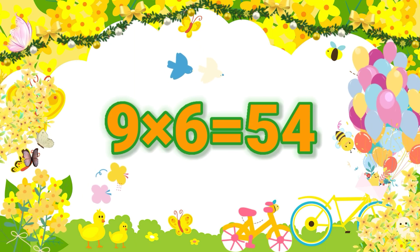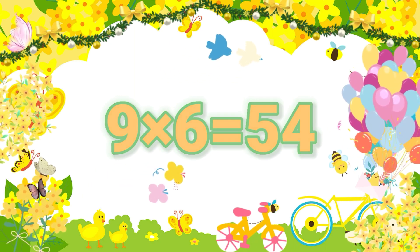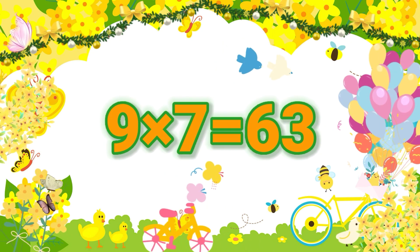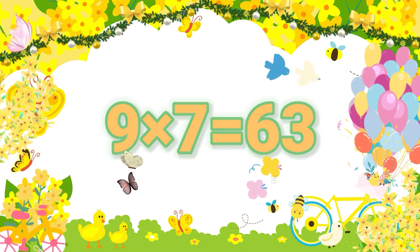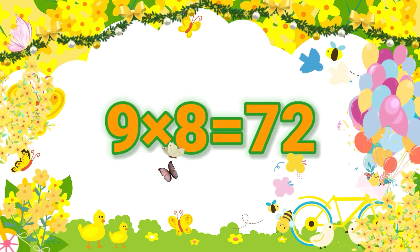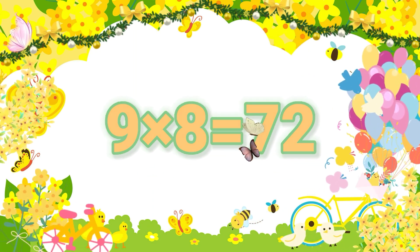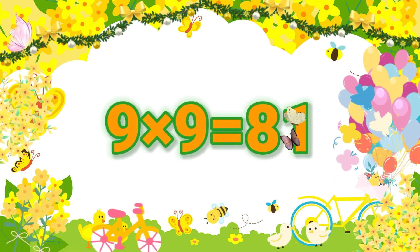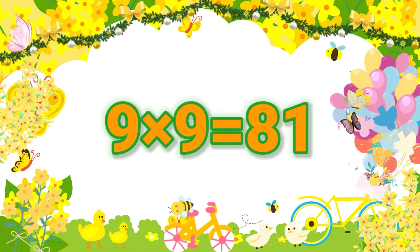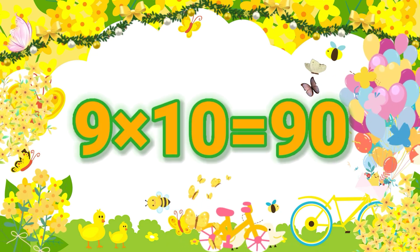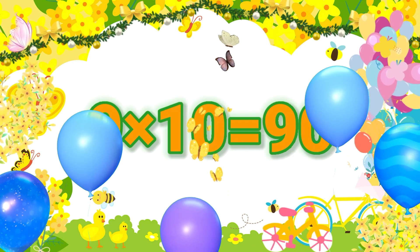Nine sixes are fifty-four. Nine sevens are sixty-three. Nine eights are seventy-two. Nine nines are eighty-one. Nine tens are ninety.